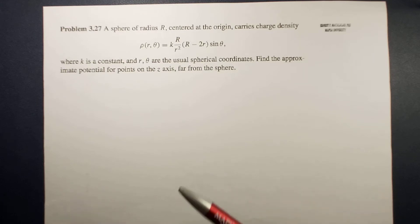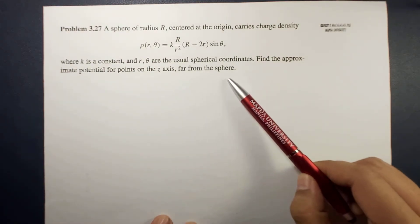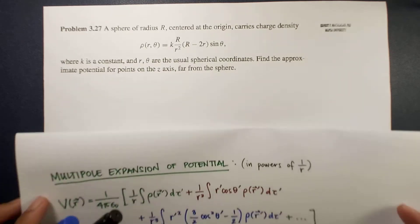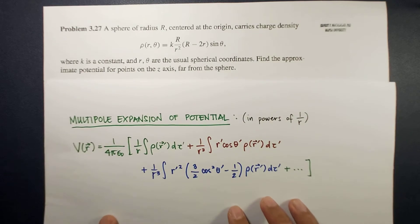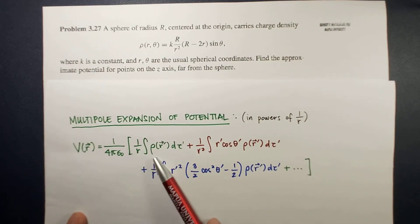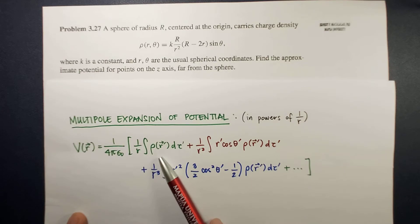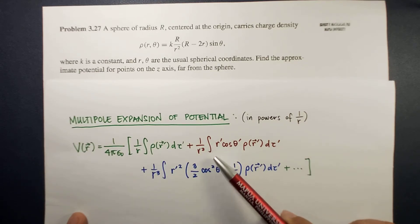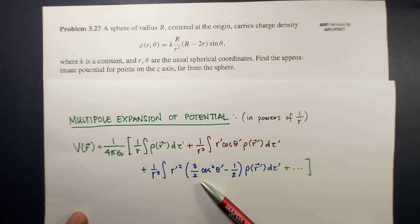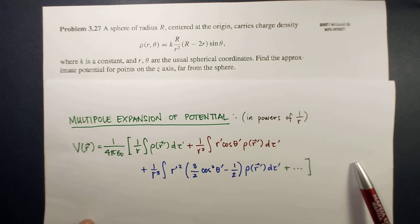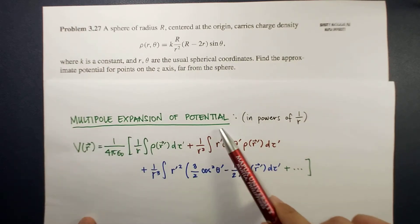This problem allows us to use multipole expansion, a special technique because we're looking at points far away from our charge configuration. The multipole expansion of the potential is given by this equation, where the following terms are your monopole, dipole, and quadrupole contributions, plus higher order terms like octopole and so on. Each term is actually a power of 1 over r.